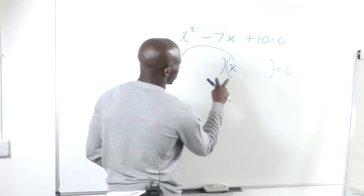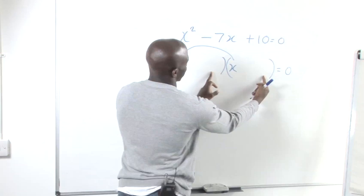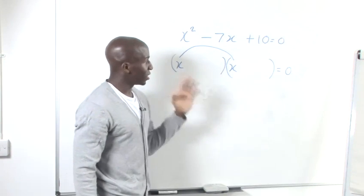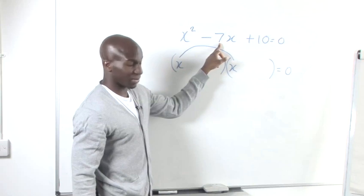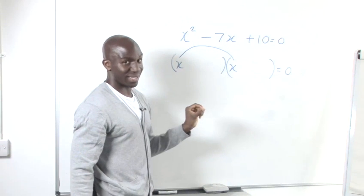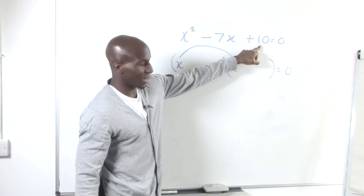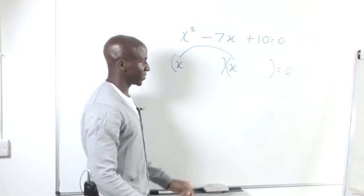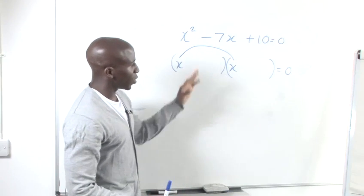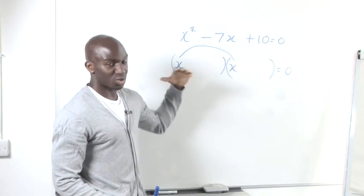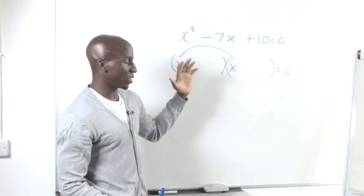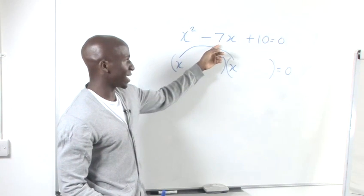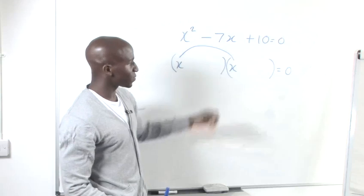Now, the two numbers that fit here are going to need to add up to negative 7 and when multiplied together provide 10, positive 10. So the first thing I would do is try to establish what the factors of 10 are, so we can then decide which ones add up to negative 7.